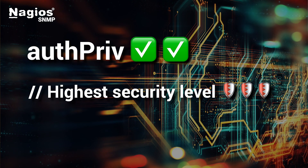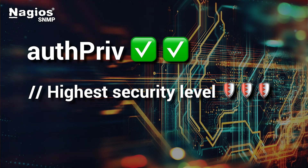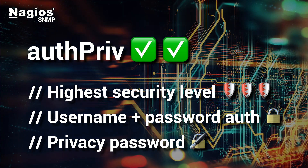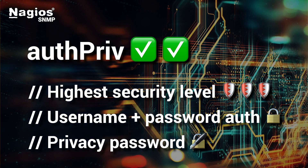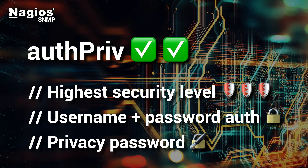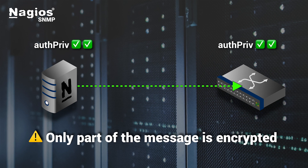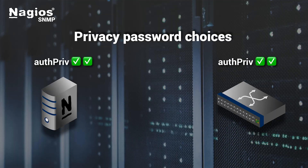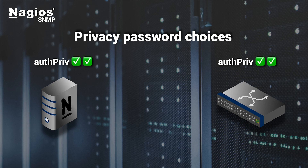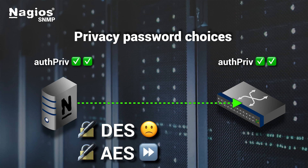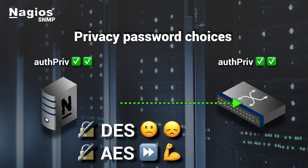AuthPriv is the highest security level in SNMP v3. AuthPriv uses a username, authentication password, and privacy password. Your SNMP message is both authenticated and partially encrypted. In AuthPriv, the authentication works exactly the same as it does in AuthNoPriv, but keep in mind that only the SNMP request itself is encrypted — the username and some other metadata remain unencrypted. The privacy password is used to encrypt and decrypt the messages. With AuthPriv, you have the choice of encryption methods: either DES or AES. AES encryption is both less computationally expensive and more secure than DES encryption, so choose wisely.